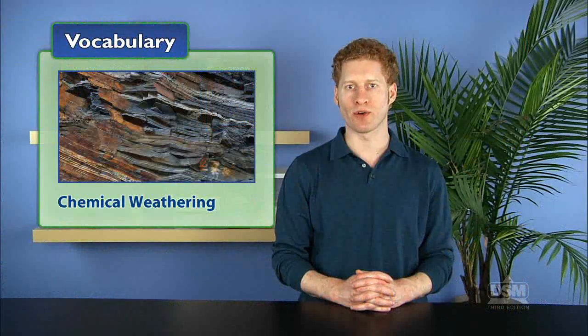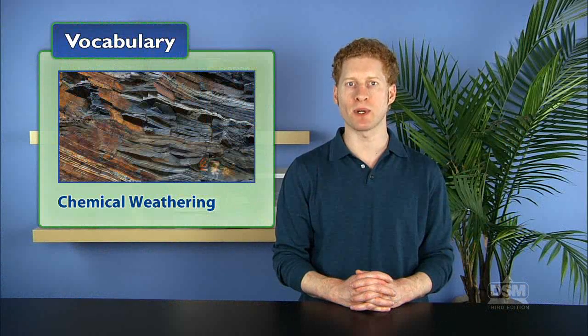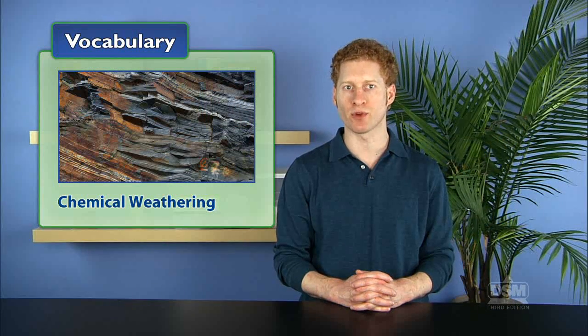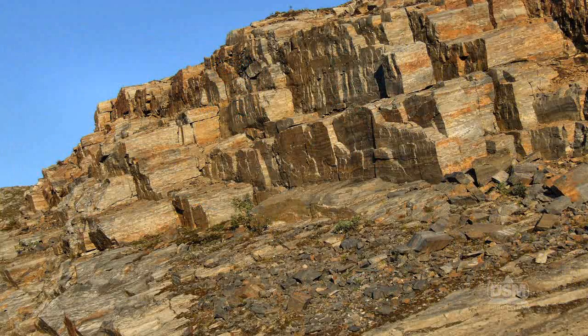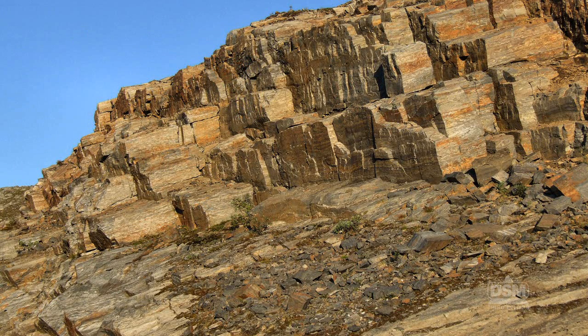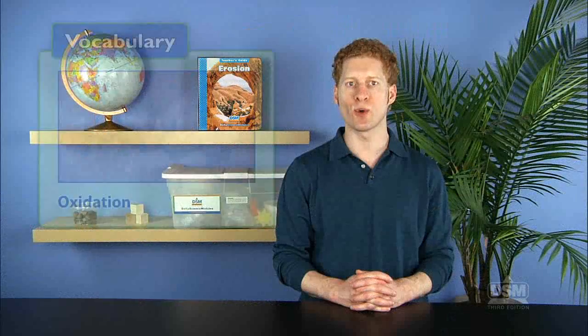Next, define chemical weathering as the breaking down of rock caused by changes in the chemical composition of the rock. Inform students that oxygen in the air can react with certain deposits in rocks, such as iron, weakening the rocks and causing them to crumble. This process is known as oxidation.